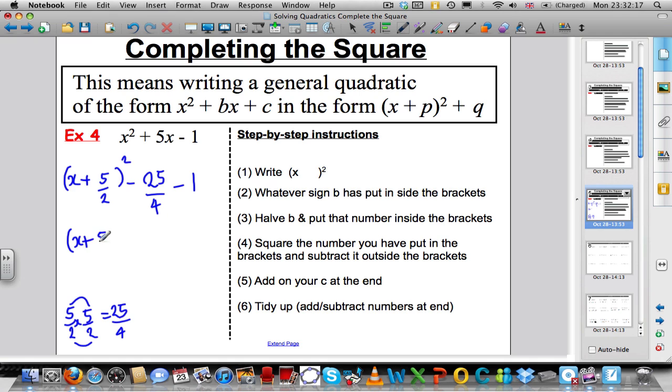5/2 squared means 5/2 times 5/2, which is top times top is 25, bottom times bottom is 4, which is 25/4. So you subtract 25/4 and you take away 1. Let's try and tidy up a little bit. So we've got (x + 5/2)² - 25/4 - 1. Well that can be written as -4/4. So you've got -25/4 - another 4/4. You end up with -29/4. That is your completed square form where p in this case is 5/2 and q is -29/4.